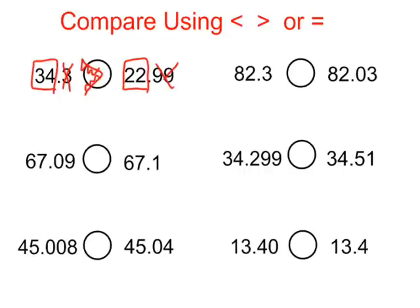On this next one, what I like to do when the whole numbers are the same — they're both 82 — I focus on the decimals. Now this one's in the hundredths, this one's in the tenths. I like to make them so they're both the same, so I'm going to add a zero here. That doesn't change its value. So I have 30 hundredths here and 3 hundredths here. 30 hundredths is larger than 3 hundredths.